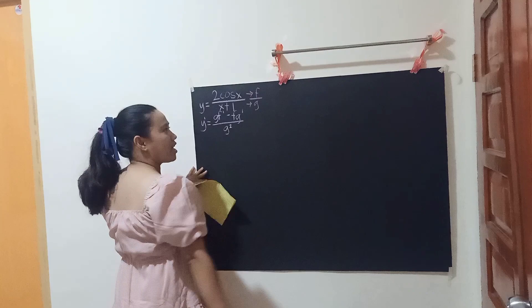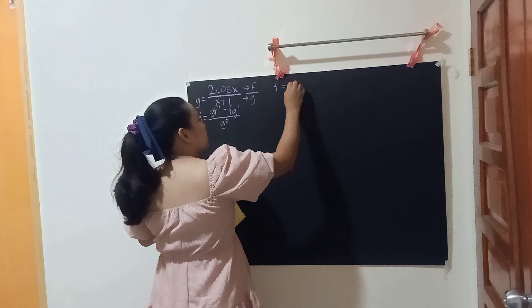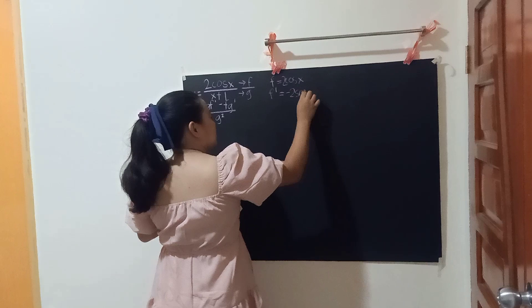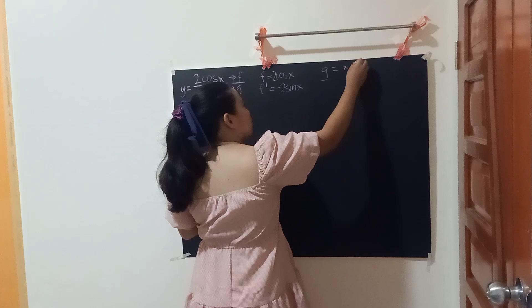F is 2cos(x). That means F prime is equal to negative 2sin(x). And G is x plus 1. That means G prime is equal to 1.